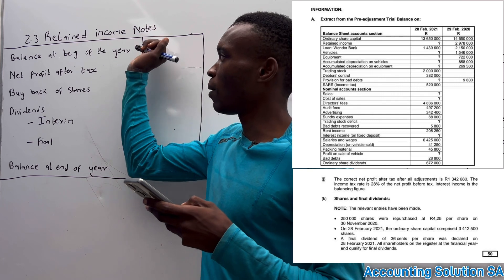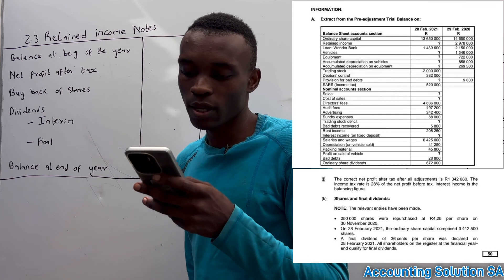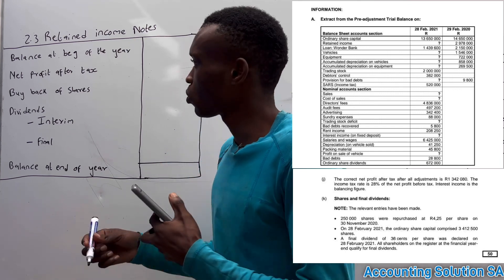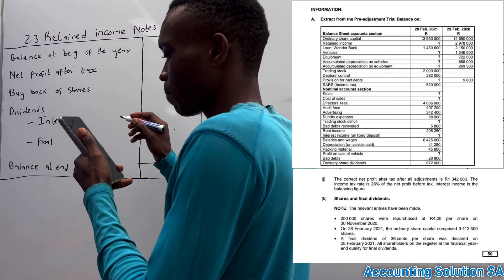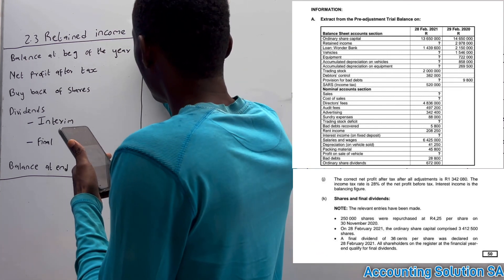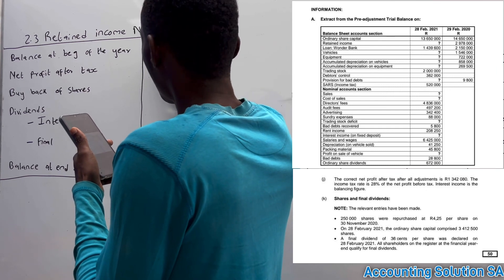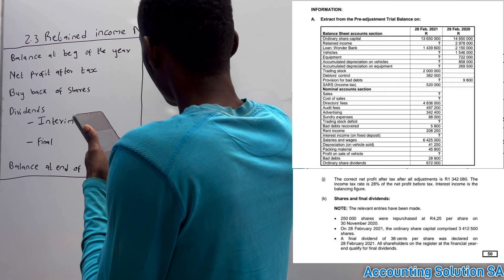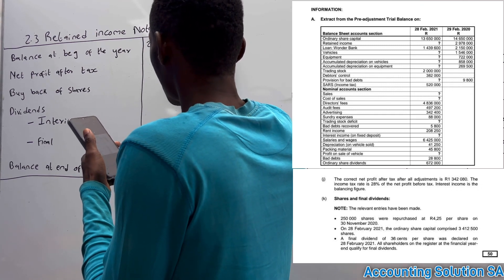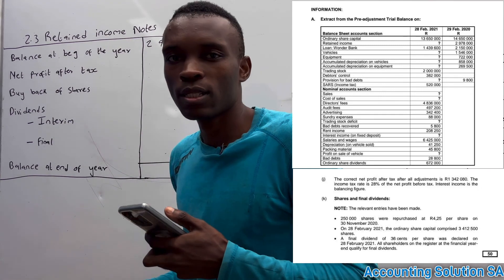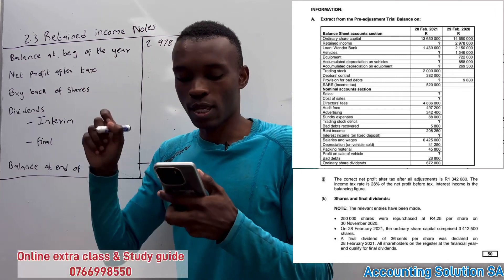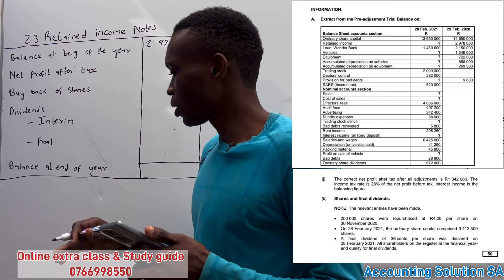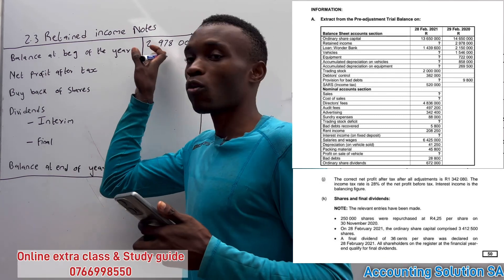Let's start with the balance at the beginning. The opening balance has been given — it is 2 million 978 thousand rand. This is the opening balance at the beginning of the year. In other cases you may find that only the closing balance is given and you have to calculate the opening balance as a balancing figure.